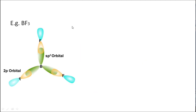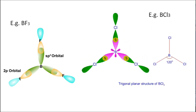As an example, in boron trifluoride, boron is bonded with three fluorine atoms, giving a planar triangular shape. In boron trifluoride, the boron atom is bonded with three atoms by SP2 hybridization, giving the trigonal planar structure. The bond angle between each hybrid orbital is 120 degrees.